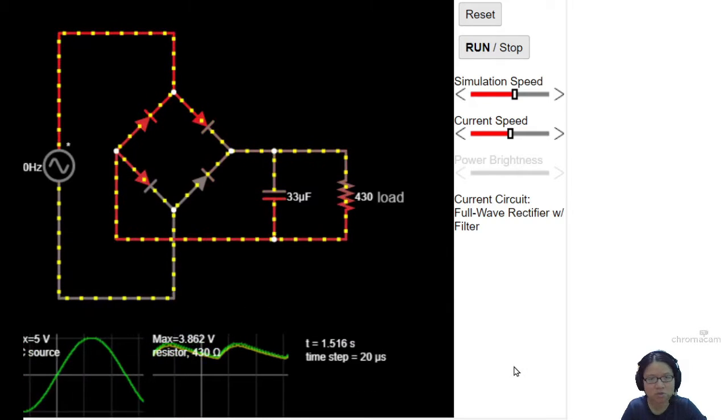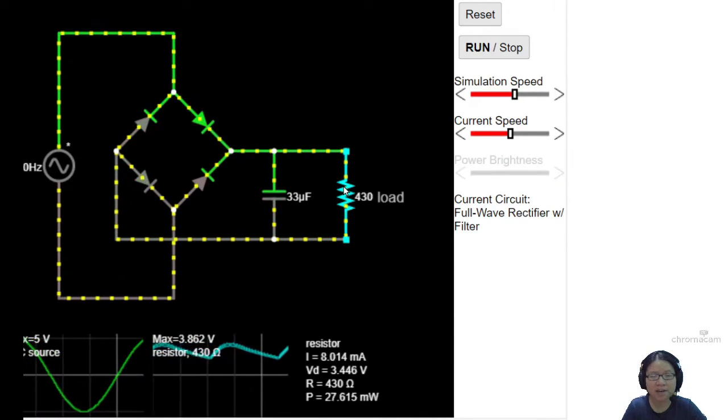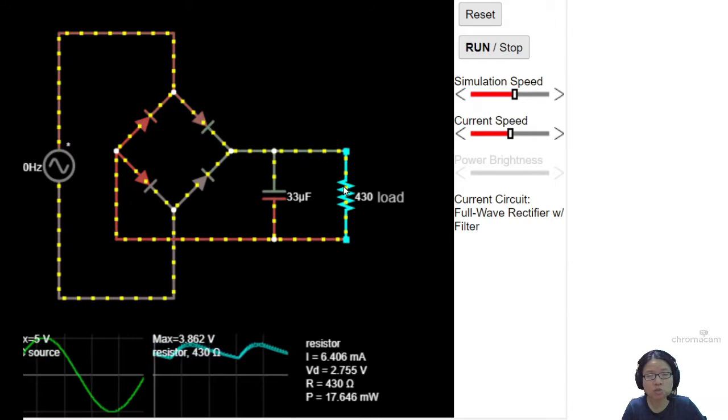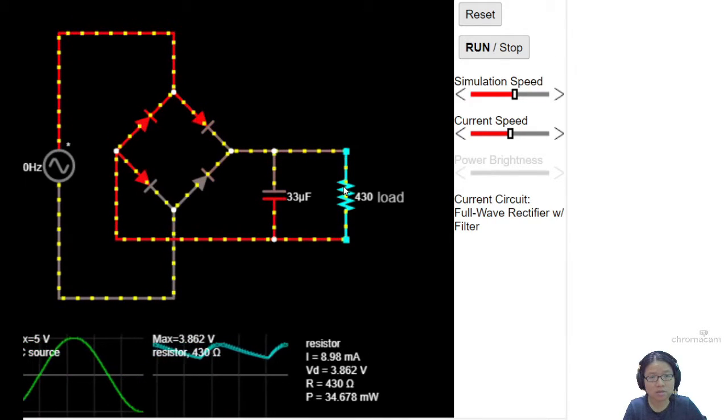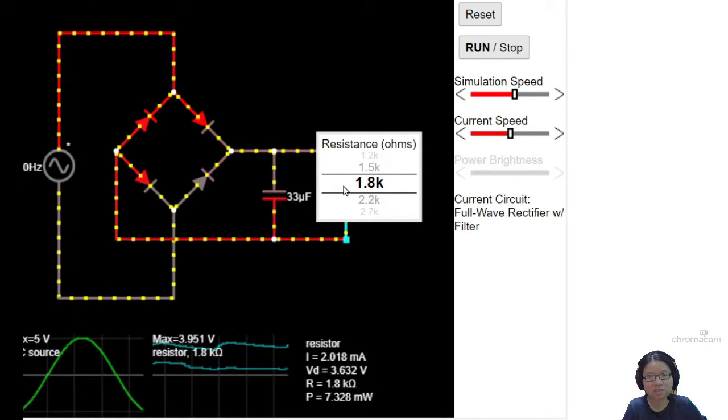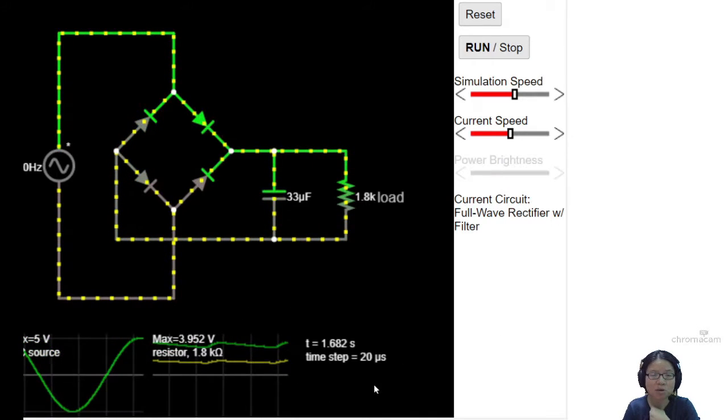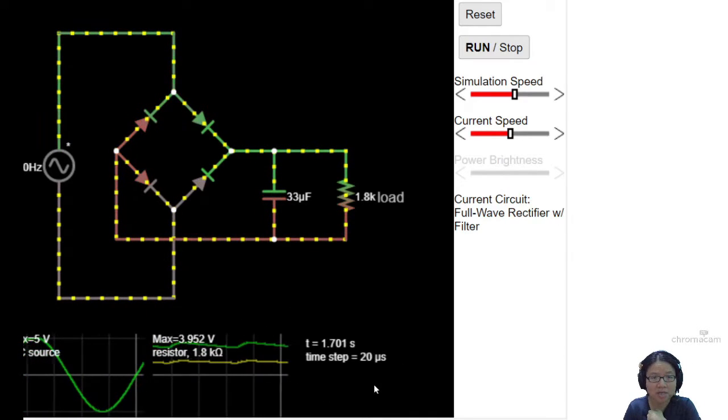Let's think about the load. If I increase the load, the charge will flow slower. So if the charge flows slower as I increase it to 1k or even nicer 1.8k, the charge will flow slower and then there will be less ripple.